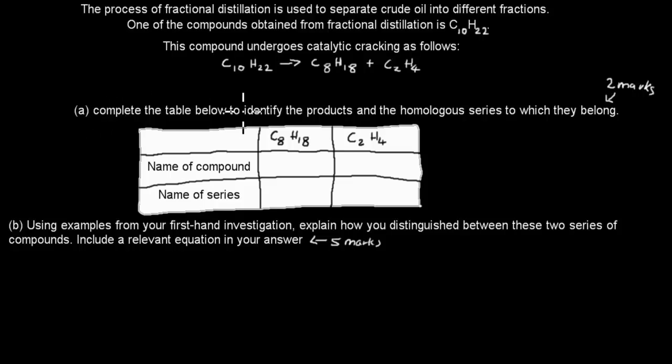Part A: complete the table below to identify the products and the homologous series to which they belong. That's worth two marks. You've got name of compound, name of series here, and C8H18 and C2H4 as products here.